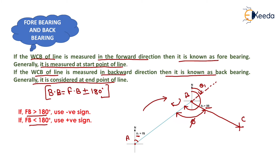That is all about forebearing, backbearing and included angle. Forebearing is always measured in the forward direction and from the start point of the line. Similarly, backbearing is measured always in the backward direction and at the end point of the line. And the angle between two survey lines, that is the interior angle, is known as the included angle.